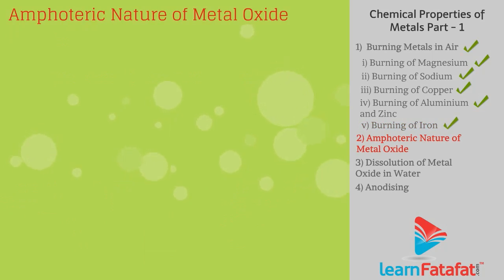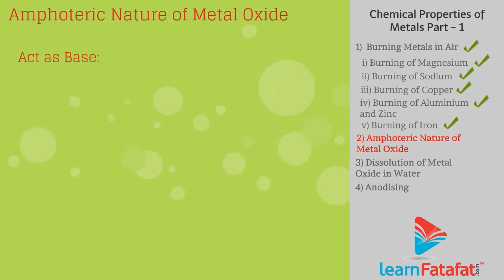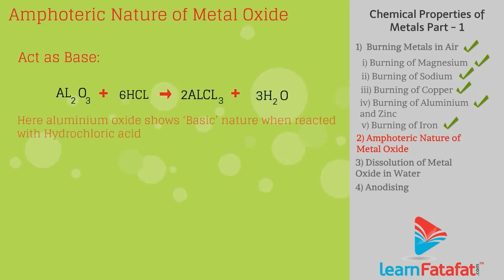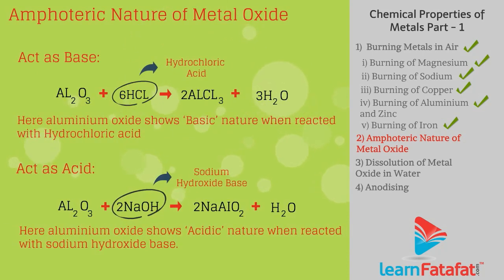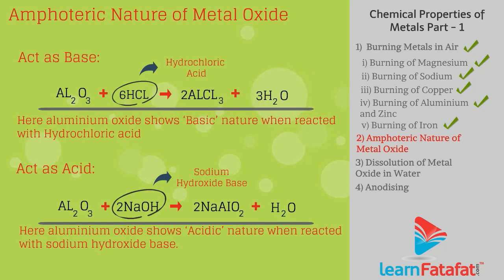Amphoteric nature of metal oxides: Generally metal oxides show basic nature, but some metal oxides such as aluminum oxide and zinc oxide show amphoteric nature — they act as a base when reacted with an acid such as hydrochloric acid, and as an acid when reacted with a base such as sodium hydroxide. That is, Al2O3 + 6HCl gives 2AlCl3 + 3H2O, and Al2O3 + 2NaOH gives 2NaAlO2 + H2O.